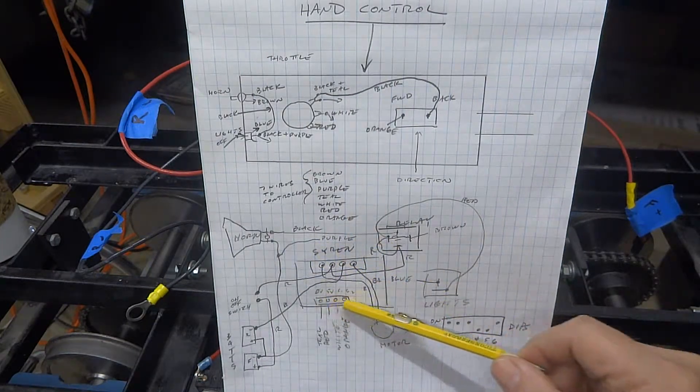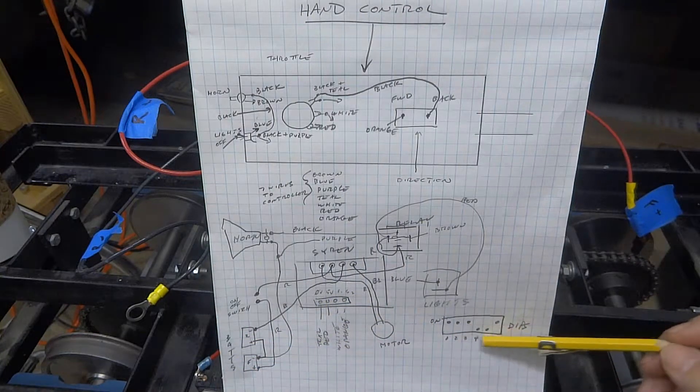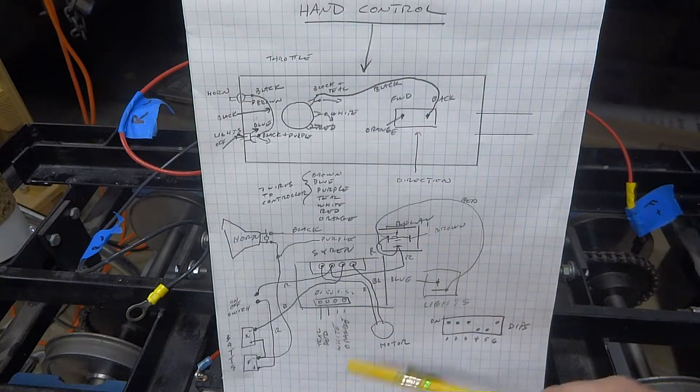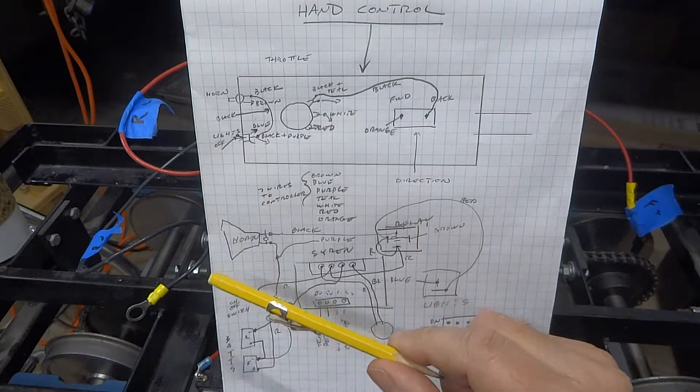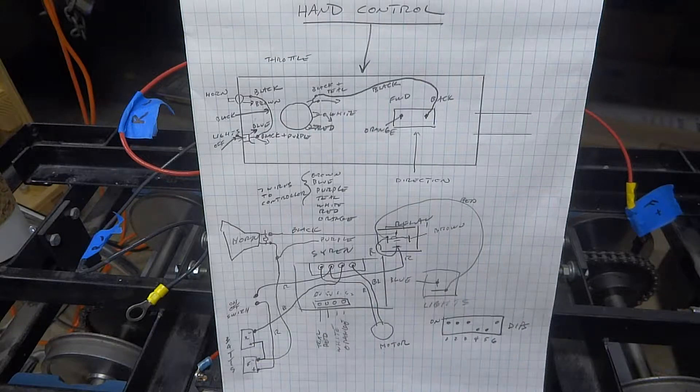Here you can see the high current outputs, these are the low voltage inputs. I've got our two batteries in series here. There's a little dip switch where you have to set here on the controller: motor, horn. Then kind of a color-coded system of keeping track of all these wires.